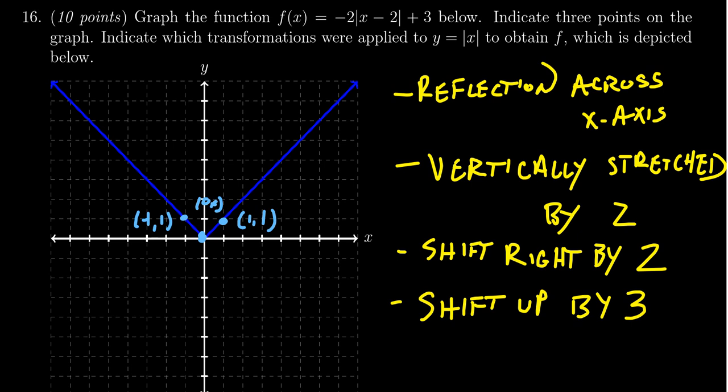If you take the origin and you reflect it across the x-axis, that doesn't do anything to it. The y coordinate becomes negative 0, which is still 0. If you stretch it vertically by a factor of two, that would stretch most y coordinates, but 0 times 2 is still 0. So any point on the x-axis is not affected by these vertical reflections and stretches. If you move things to the right by two, that does affect it. You're going to move over by two, and then you shift it up by three. You see that the vertex of the absolute value moves over to this point right here. We get the point (2,3).